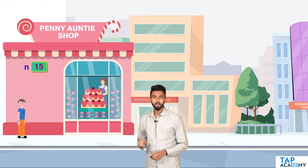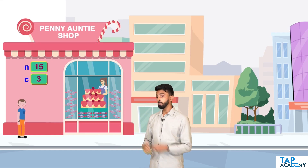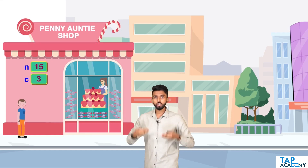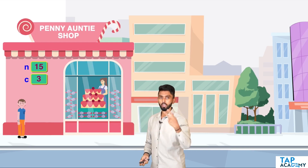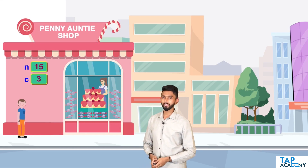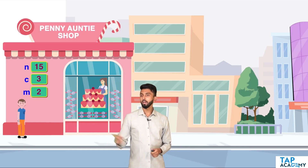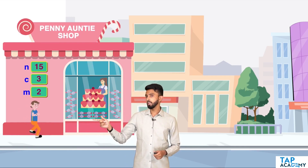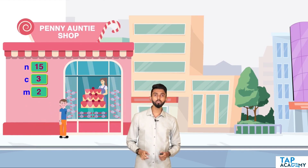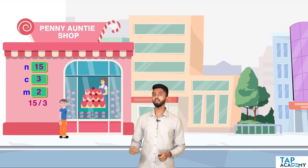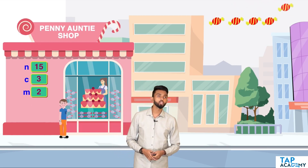Now per candy bar is 3 dollars, so C is 3. Penny Auntie has an offer: exchange 2 wrappers and she will give you 1 more chocolate bar free — give 2, take 1. That is M which is 2. Initially, how many chocolates can he buy with 15 dollars? 15 divided by 3 equals 5 chocolates.